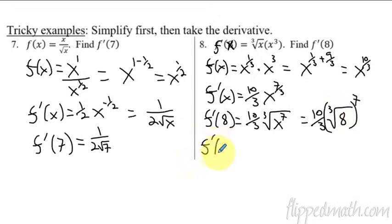Because this is f prime of 8 equals. So this is now 10 thirds. The cube root of 8 is 2 to the 7th. And then 2 to the 7th is, yeah, that's 2, 4, 8, 16, I'm counting on my fingers, 16, 32, 64, 128.